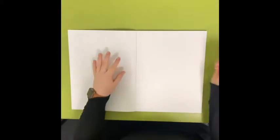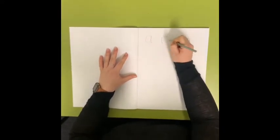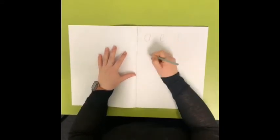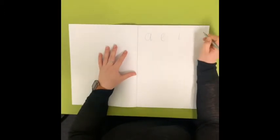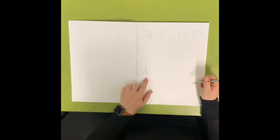So what you will do is you're going to write the vowels A, E, I, O and U and then draw a picture to match.